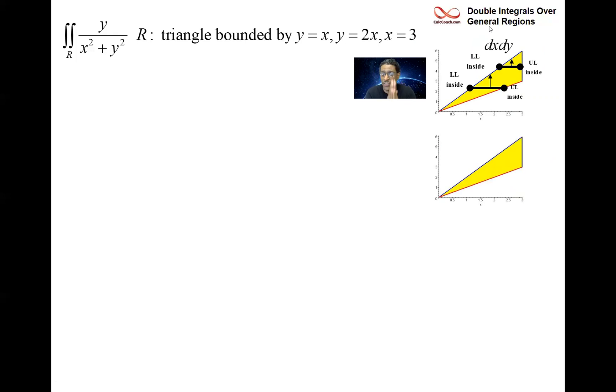dy dx is a vertical slice that gets moved from left to right. The upper curve is always the steeper slope line; the lower curve is always the less steep slope line. So y equals 2x is your upper, y equals x is your lower. That never changes from left to right as you move between x equals zero and x equals three.